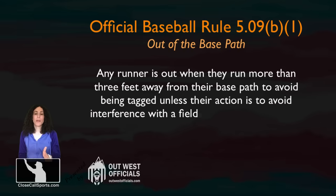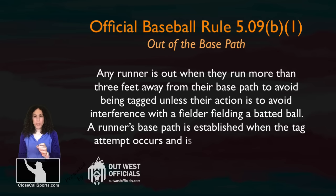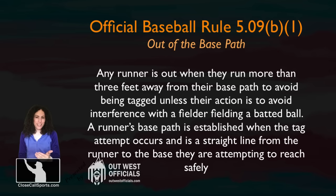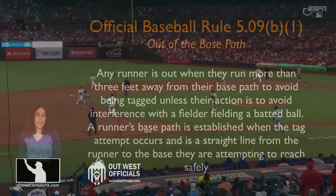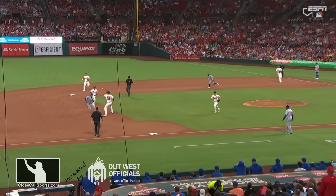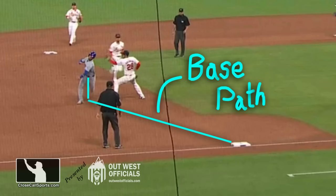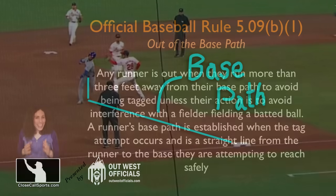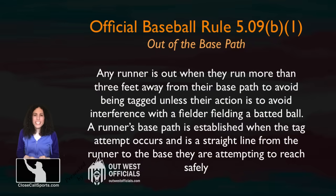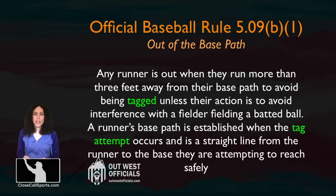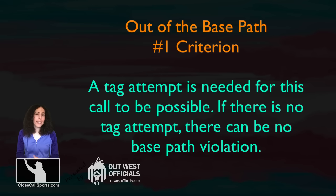Any runner is out when they run more than three feet away from their base path to avoid being tagged, unless their action is to avoid interference with a fielder fielding a batted ball. A runner's base path is established when the tag attempt occurs, and is a straight line from the runner to the base they are attempting to reach safely. A very important part of this rule: you need a tag attempt for a base path violation to apply. If there is no tag attempt, then there is no base path issue.